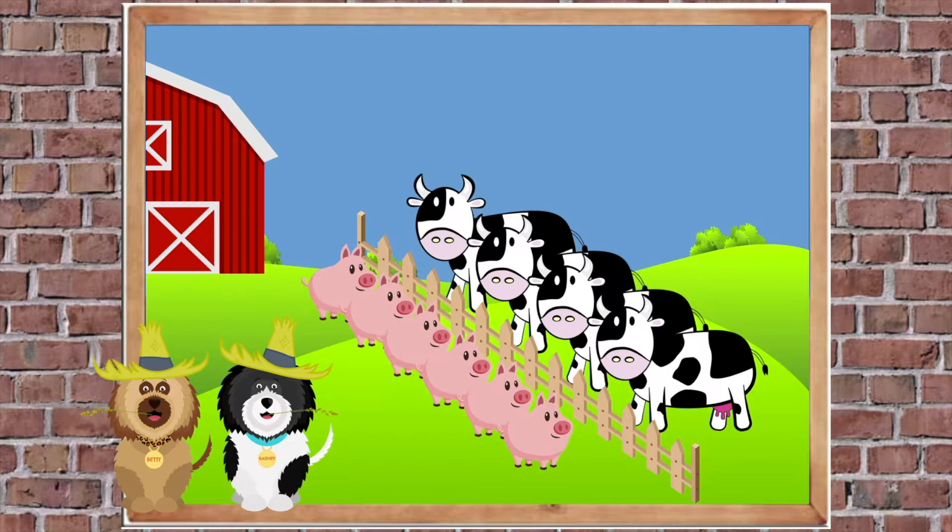What have we got here? Yeah, there's some pigs and cows. How many cows are there? Can you count them? Right, let's check. There's one, two, three, four cows. How many pigs are there? Right, let's check together. There's one, two, three, four, five, six. Excellent.